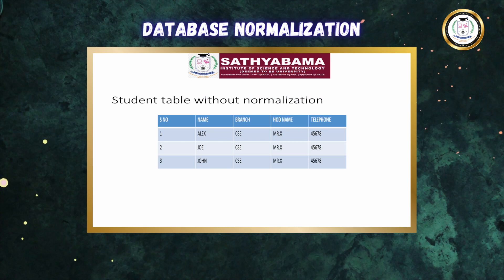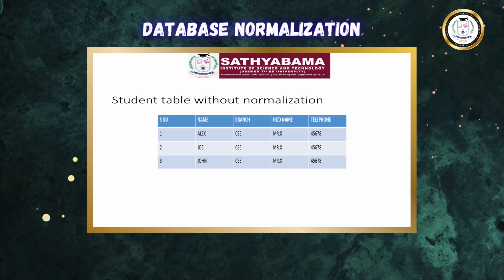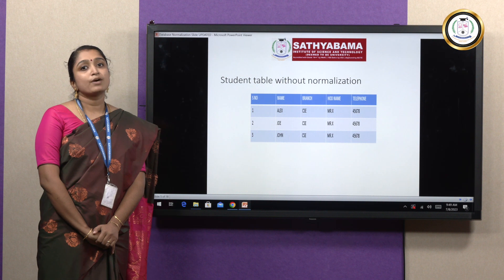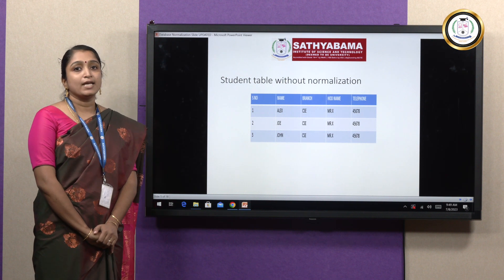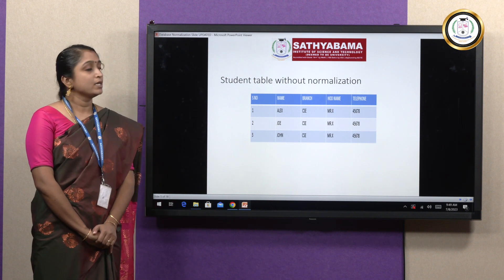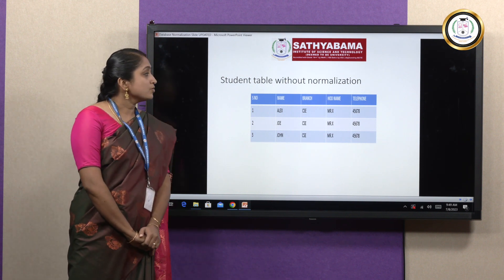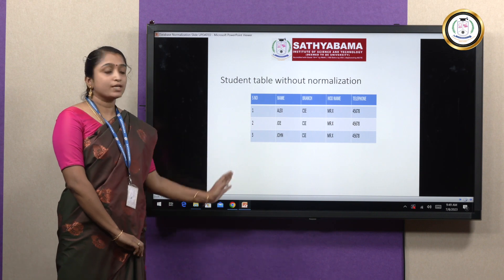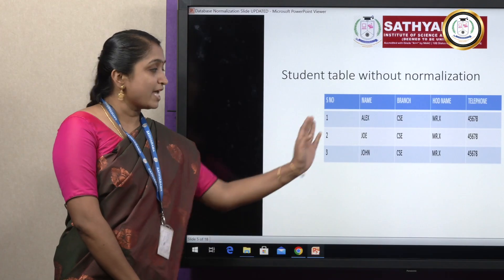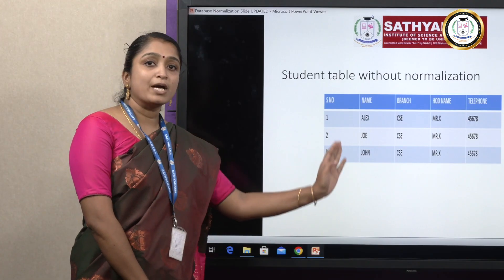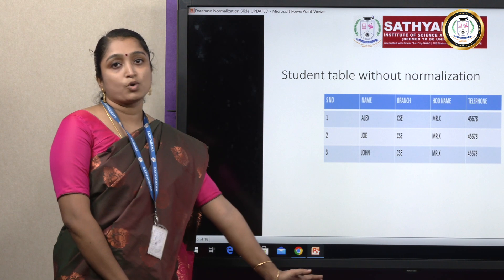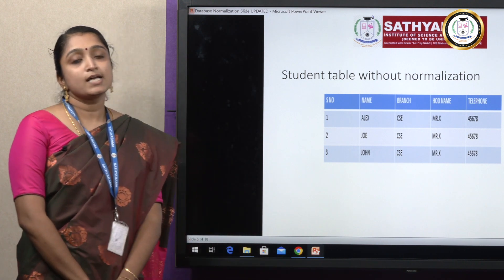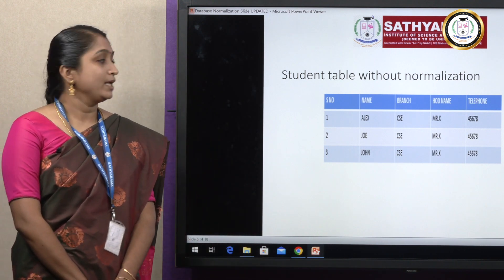What is update anomaly? Suppose the department telephone has changed. We want to update the telephone number. In that case, you need to do the updation in all the rows — the same data needs to be updated in every row. That is the updation anomaly.